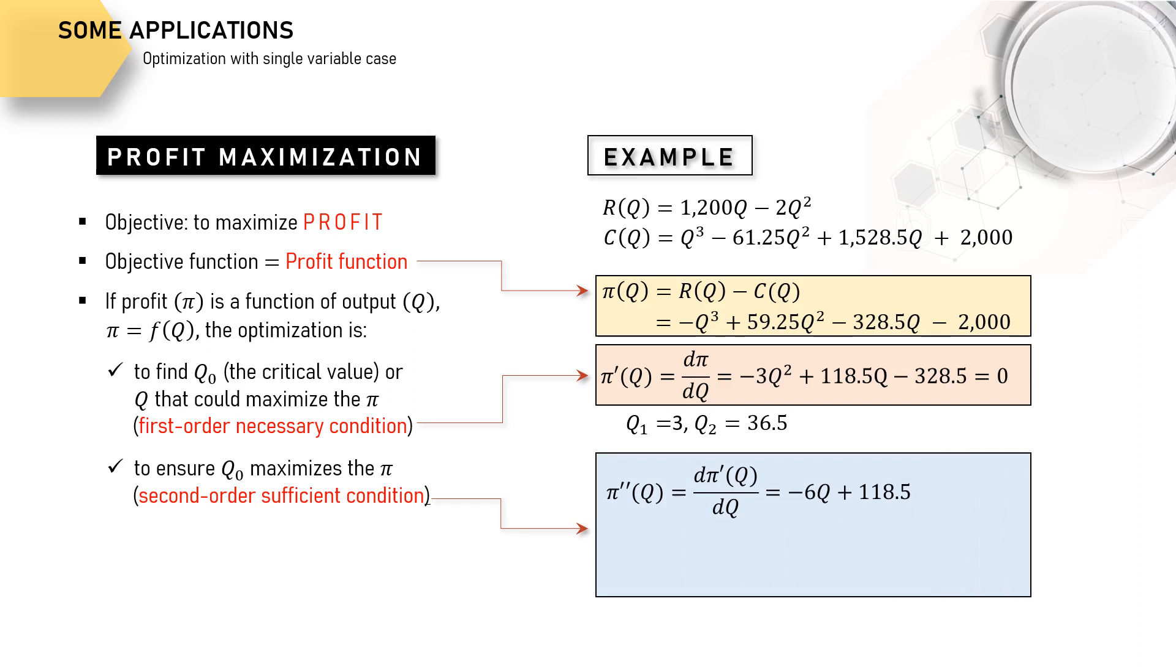We just need to evaluate the second derivatives at the two critical values. So here we have the second derivatives evaluated at Q₁ and Q₂. Obviously, Q₂ is the one that maximizes the profit because the value of the second derivative evaluated at Q₂ is negative.